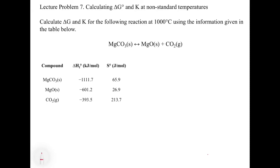The problem says calculate delta G — with no naught, because this is not at 25 degrees Celsius — and K at 1,000 degrees Celsius using the information given in the table. To get delta G here, we can't use delta G of formation values since those aren't provided, so we'll use the fact that delta G equals delta H minus T delta S. We need to calculate delta H and delta S from the given data, and then use those to get the equilibrium constant.